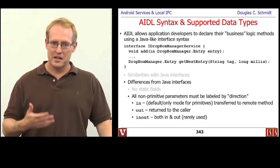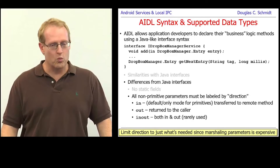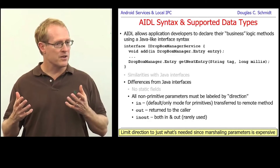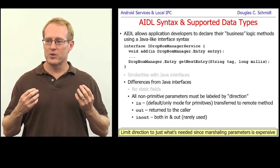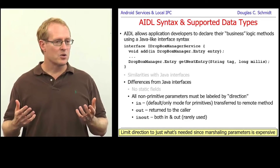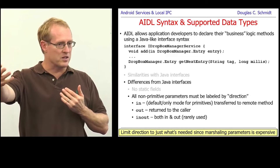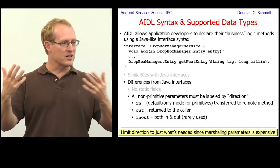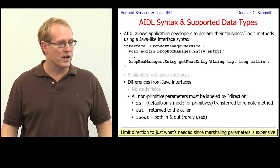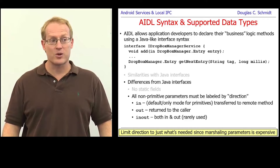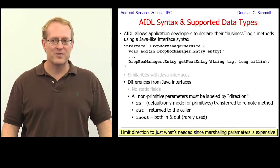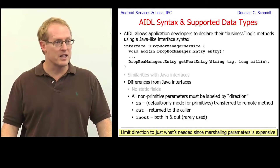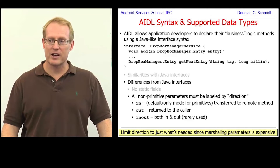Most common things use 'in'. There are some things that use 'out'. It's important to remember this because when passing data between address spaces, you want to limit the amount of data passed. When you say 'in', it only goes with the request, not the response. When you say 'out', it only comes back with the response. This is also characteristic of other interface definition languages like CORBA or Microsoft's IDL for COM and DCOM.